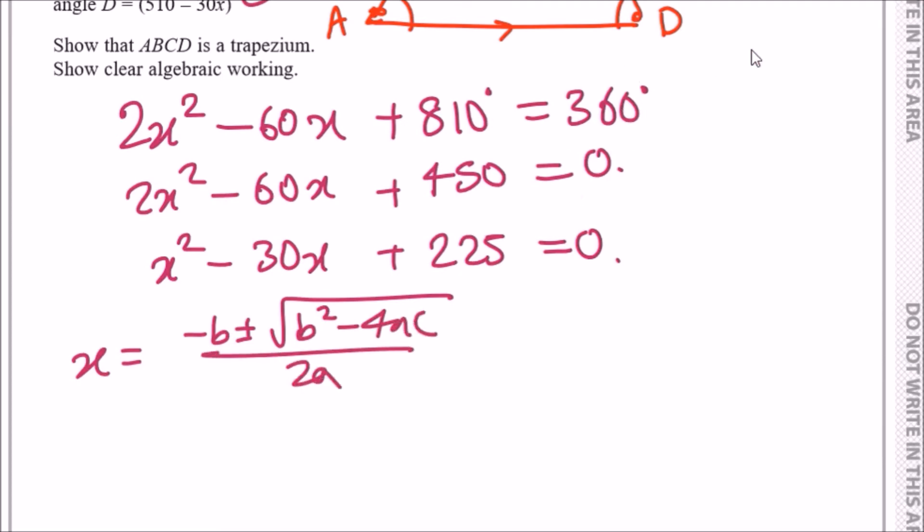The value of a is the coefficient on x squared, which is 1, b is minus 30, and c is 225. We should get the following.